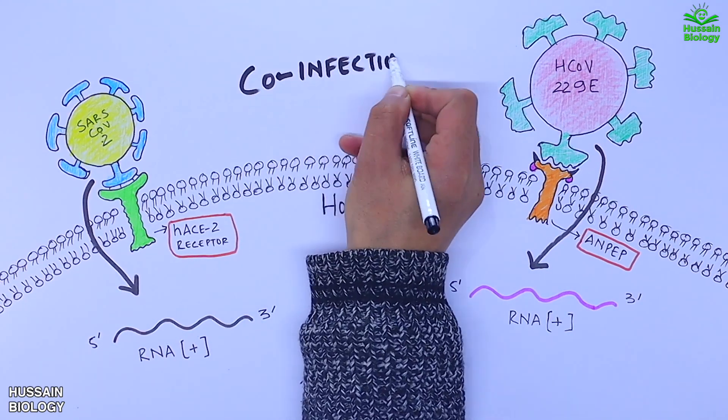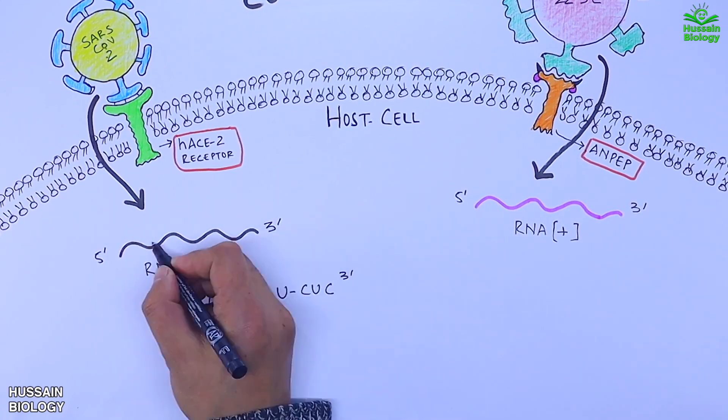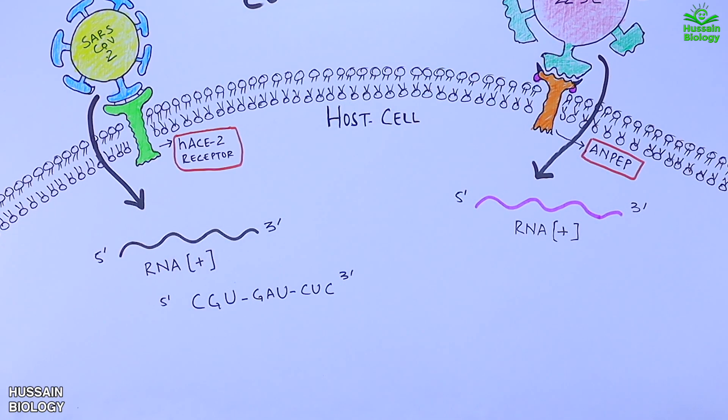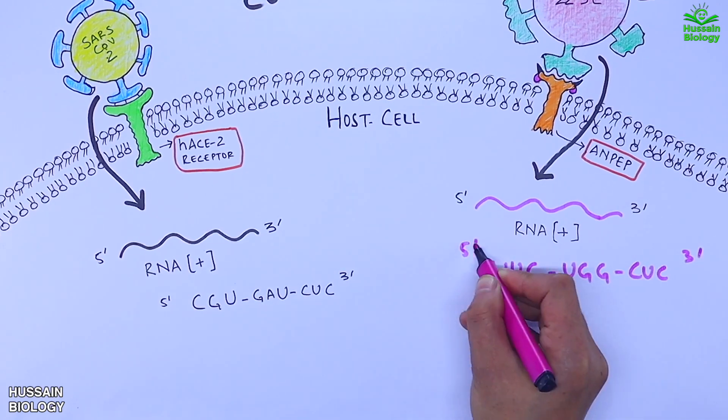Here we see we have a specific sequence of SARS-CoV-2 as CGU, GAU, CUC. The first codon is at the 214 position. In the same way we have a specific sequence on 229E virus as UUC, UGG, CUC at 255 position.